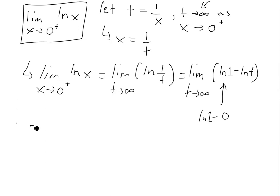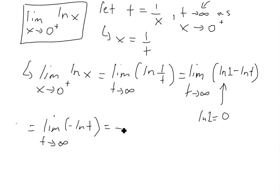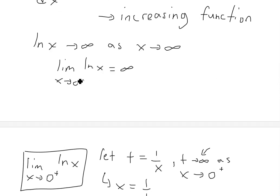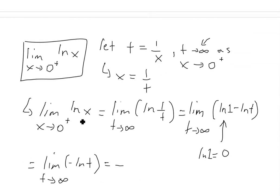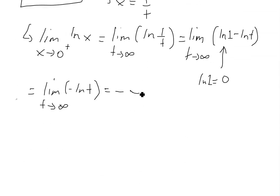Bringing the negative out, we get negative times the limit as t approaches infinity of ln t. We already know that limit equals infinity, so we get negative infinity. Therefore, the limit as x approaches 0 from the right side of ln of x equals negative infinity — proven.